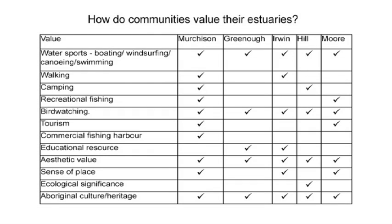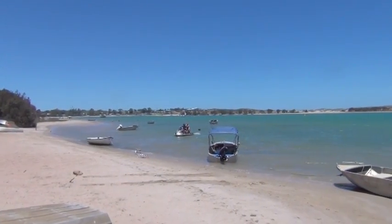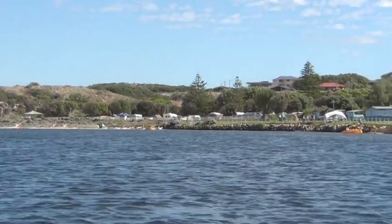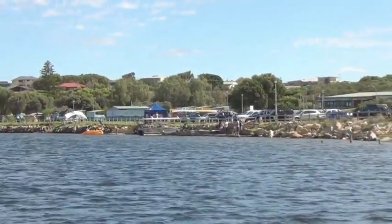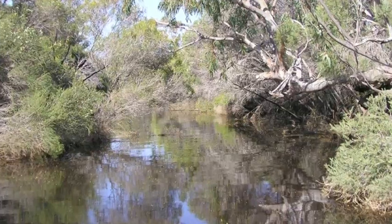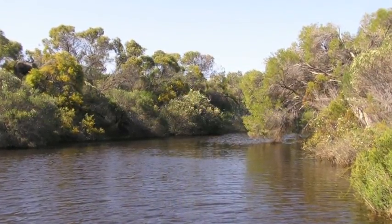During the estuary workshops, participants were asked to list the attributes of their local estuary that they value most. This table lists the values attributed to each of the five Northern Agricultural Region estuaries included in this project. Water sports, bird watching, aesthetics, and Aboriginal cultural and heritage were attributes valued in all five estuaries. Recreational fishing and tourism were also highlighted as important values in the larger estuaries of the Murchison and Moore rivers. The Hill River estuary had special ecological significance due to its relatively pristine condition.